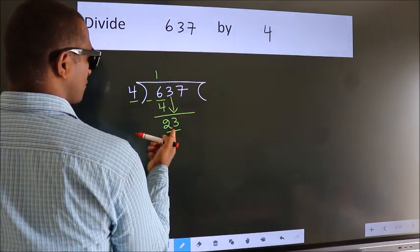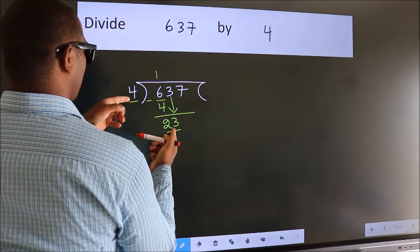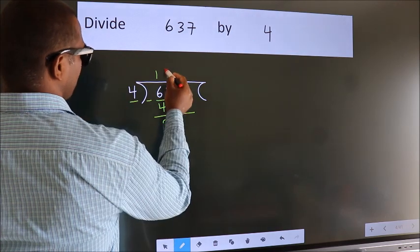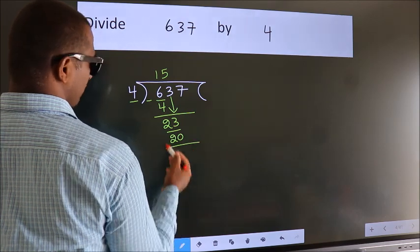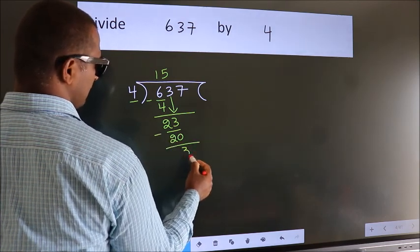A number close to 23 in the 4 table is 4 fives 20. Now we subtract. We get 3.